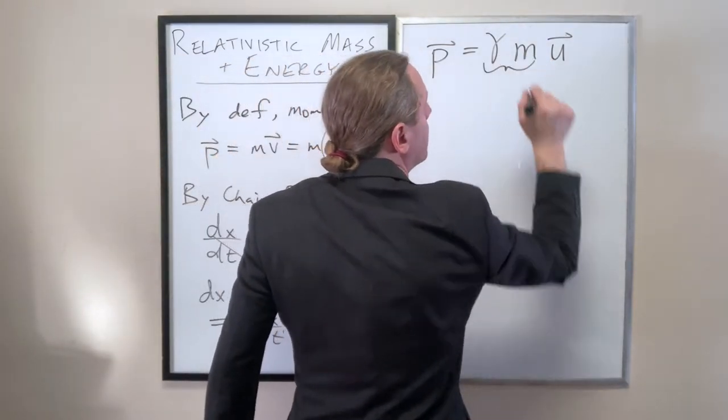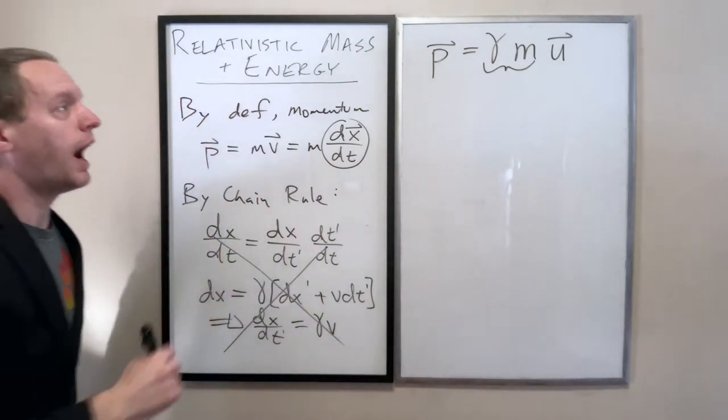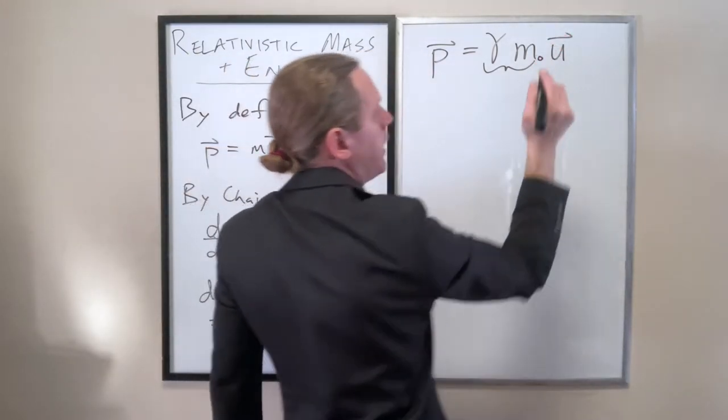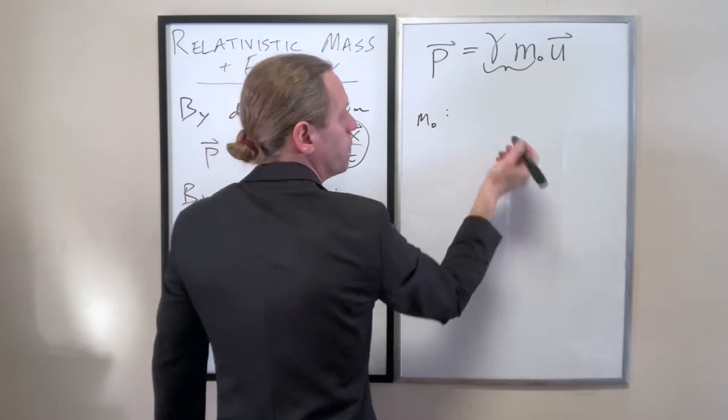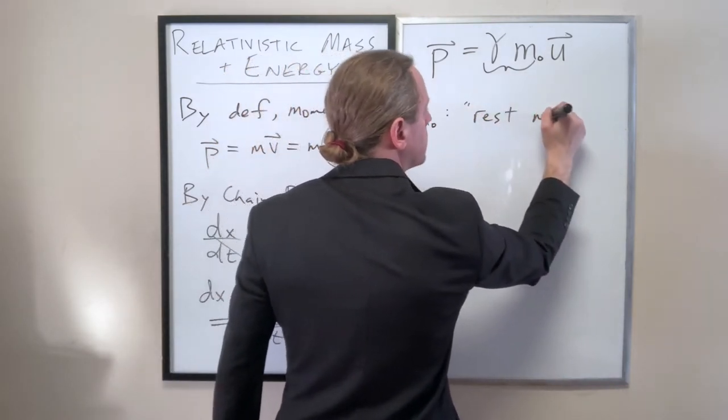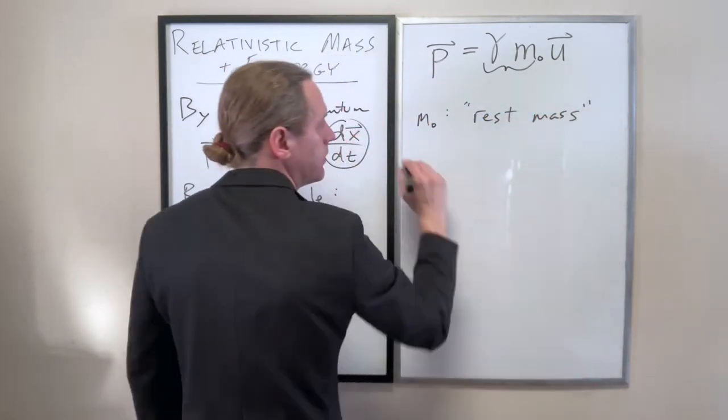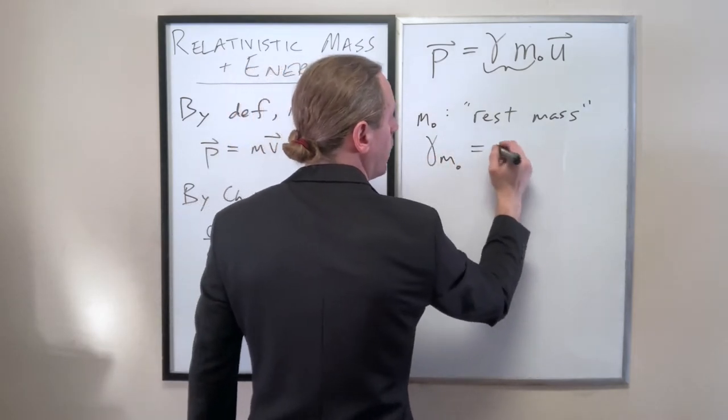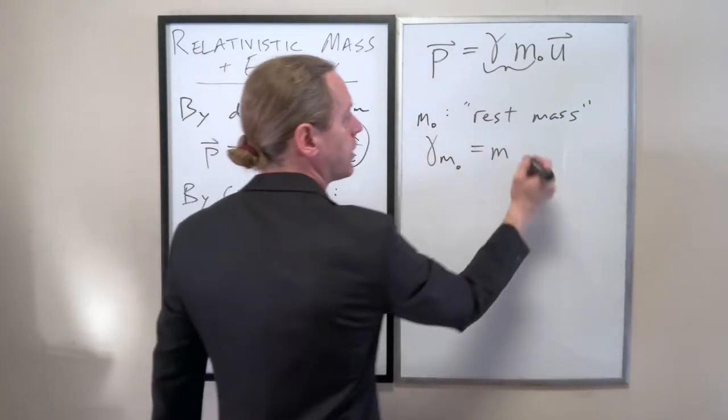And now this gamma M, I'm going to write this a little bit differently too. I'm going to write M as M0, where M0 is what we call the rest mass.